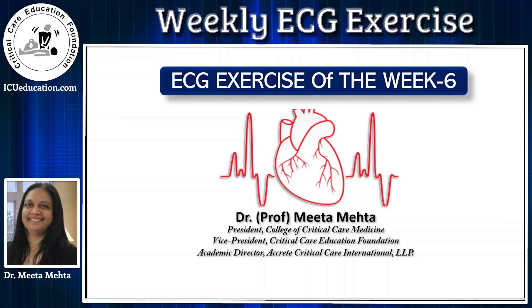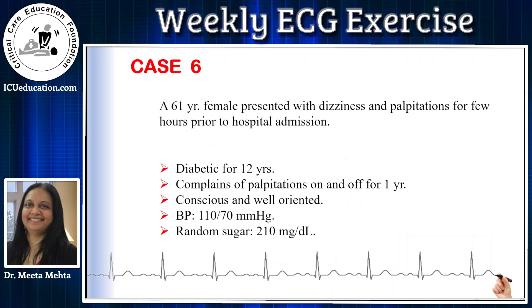Welcome to weekly ECG exercise case 6. This was a 61-year-old female who presented with complaints of dizziness and palpitations for a few hours prior to hospital admission. She was a known case of diabetes on regular treatment for the past 12 years. She also complained of palpitations on and off for the last one year, but the symptoms would spontaneously disappear. On examination, she was conscious and well-oriented. Her blood pressure was 110/70 and sugar was 210 on admission.